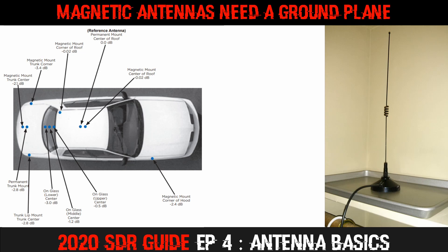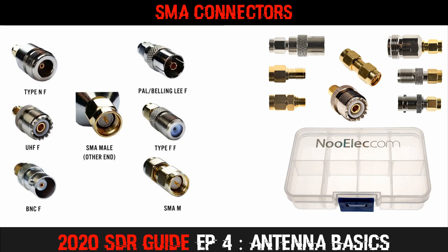Magnetic mount antennas need a ground plane to function correctly — they were originally designed to be used on the roof of vehicles. A simple solution when using them at home is to set the magnetic antenna in the middle of a piece of metal, such as a cookie tray or the top of a filing cabinet. Ideally there should be an area of approximately a quarter wavelength of metal around the base of the mag mount. It's also useful to have SMA antenna adapters around when experimenting with various antennas. Both RTL-SDR blog and NuELEC offer adapter kits which are incredibly useful when you're starting out.